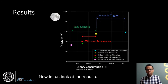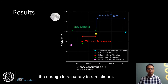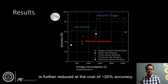Now, let us look at the results. The ultrasonic trigger lowers the energy consumption by around half while keeping the change in accuracy to a minimum. When the camera is turned off between the obstacles in the lazy camera mode, the energy consumption is further reduced at the cost of around 20% accuracy.